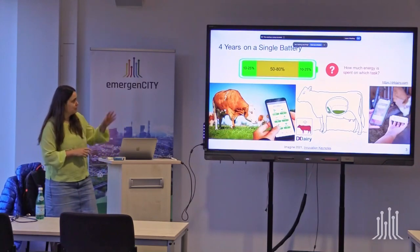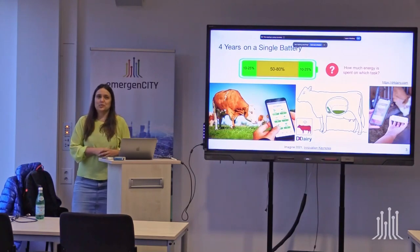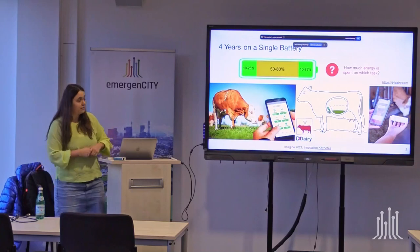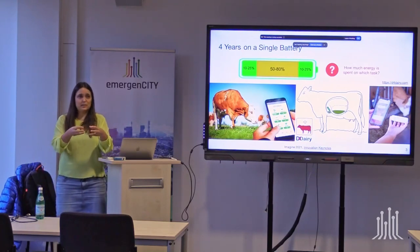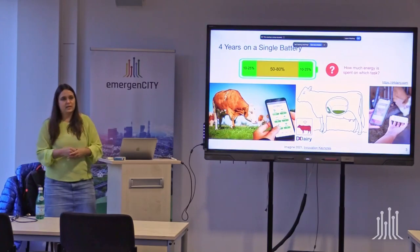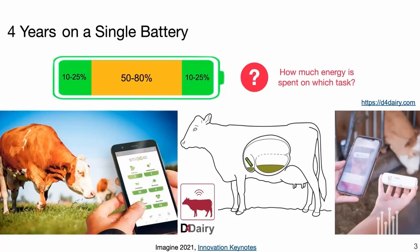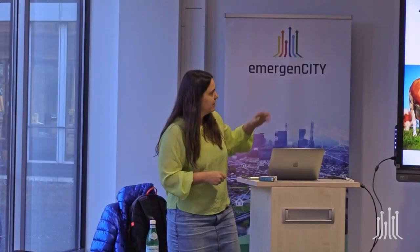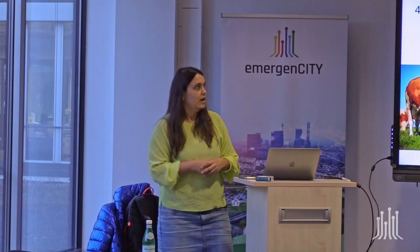I usually start my lecture by showing this slide just to warm up. I used to work on a project called D4Dairy where we embedded a device into a cow, got the data, and tried to analyze it to do early prediction of disease. You can probably imagine that replacing batteries in this setup is a no-go — the device should work for four years. We were working with the data, and looking at the battery, you can see it's split into three sections representing three major tasks executed by the system.